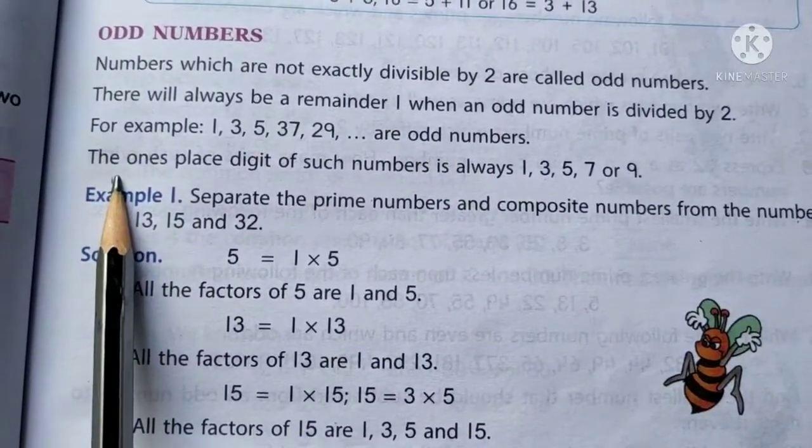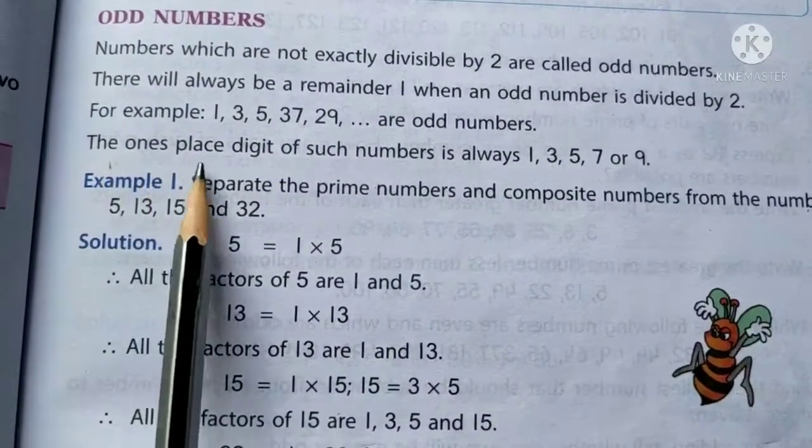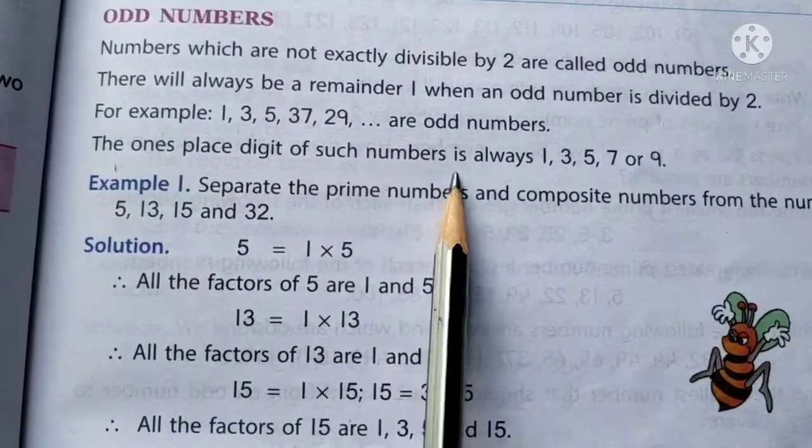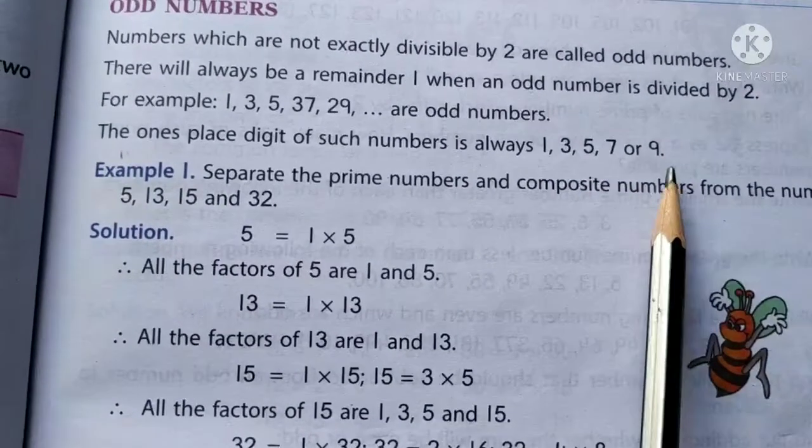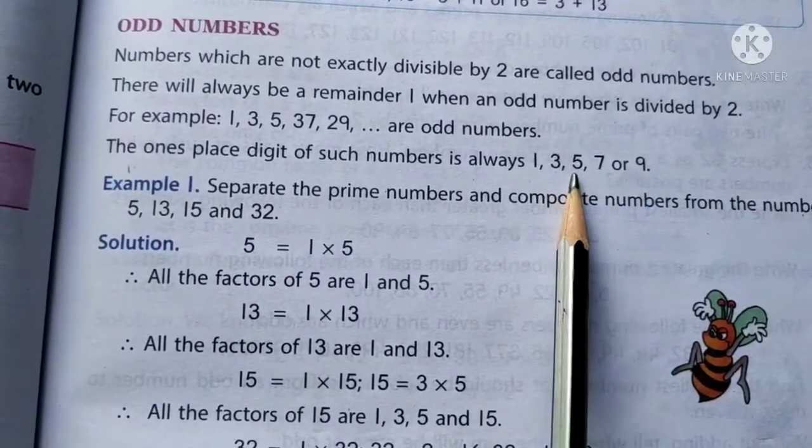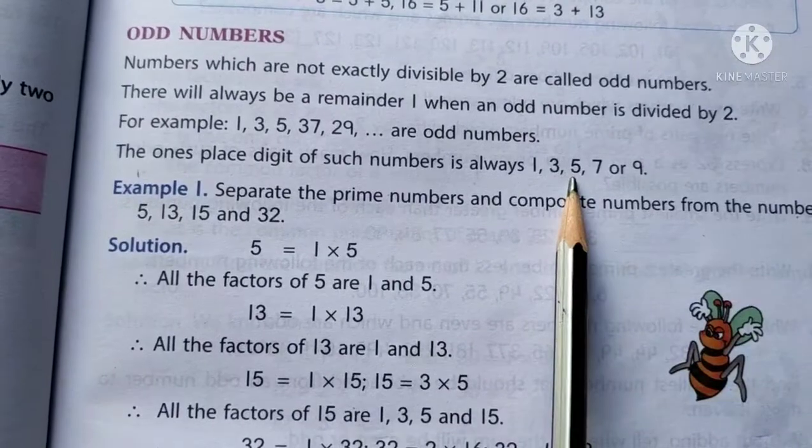How can you identify the odd numbers children? The ones place digit of the odd numbers will always be 1, 3, 5, 7 or 9. In this way, you can easily check whether a number is even or odd.